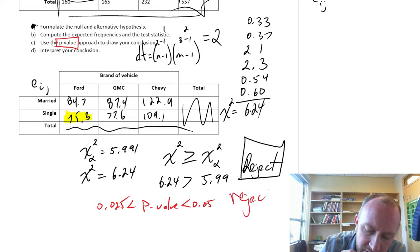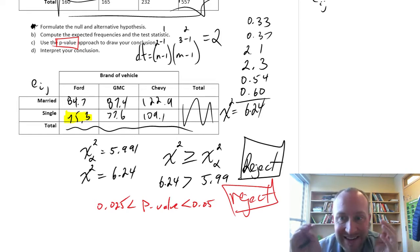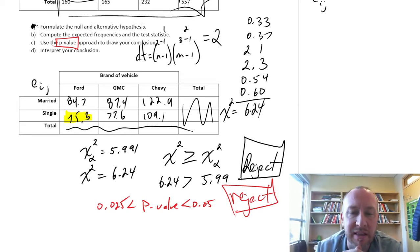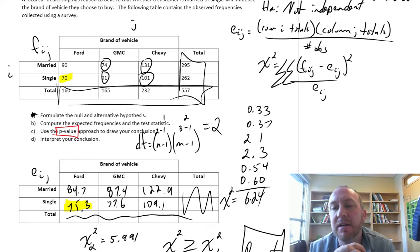So again, same conclusion. Thankfully, we reject our null hypothesis. We have evidence to support the dependency between the brand of vehicle that a person buys and their marital status.